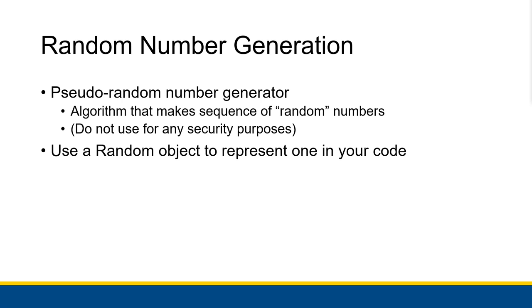What you would do in your code to get random numbers is use a random object to represent one. It is an actual object — we've talked a bit about objects throughout Visual Basic, and we've used a lot of things that are objects without knowing it, like all the controls. You already know how to use the properties and methods of an object. Random is very much like interacting with those controls — it is an object with properties and methods — and you use it to represent a pseudo-random number generator in your code the same way you'd use a control object for a button, label, or text box.